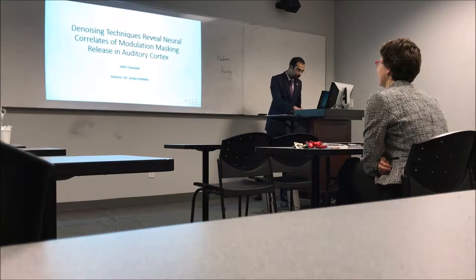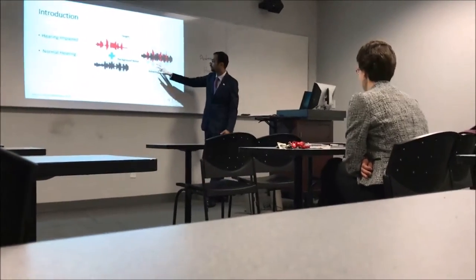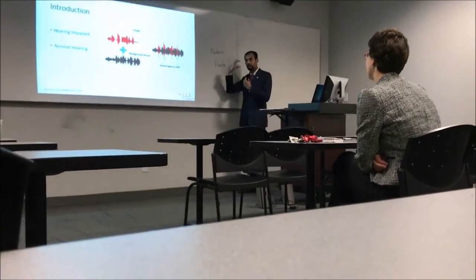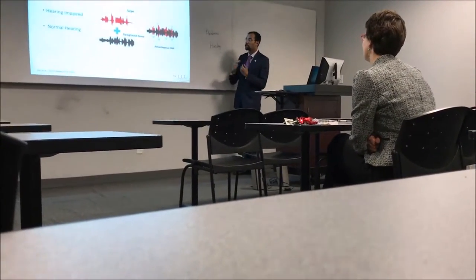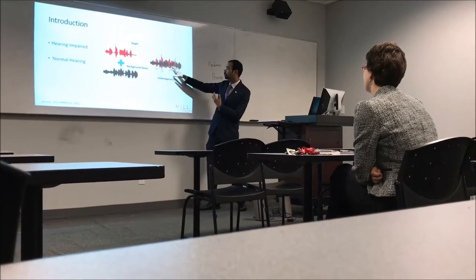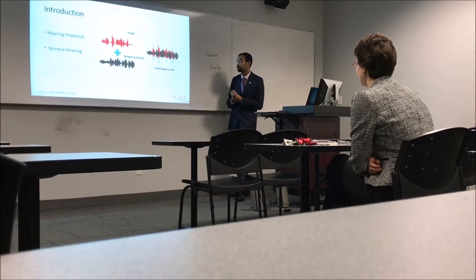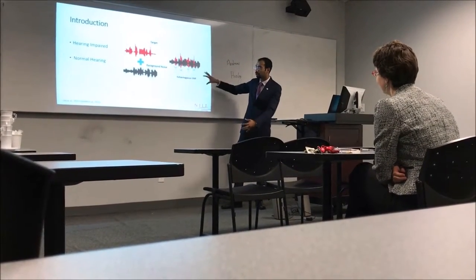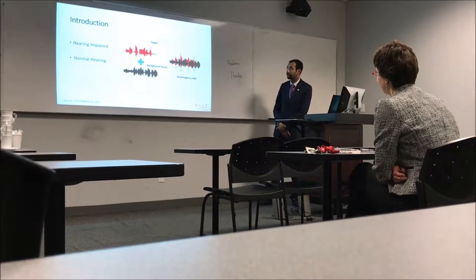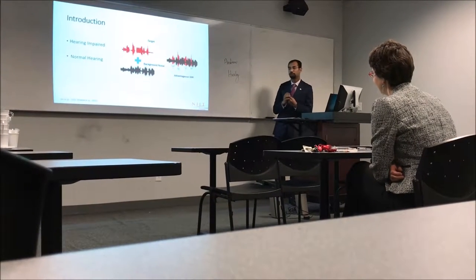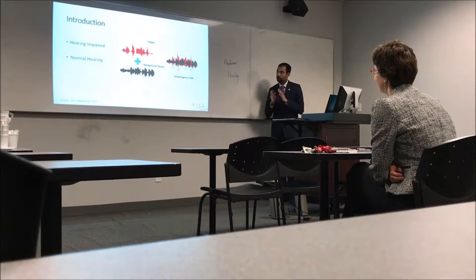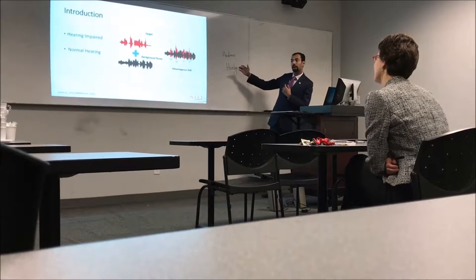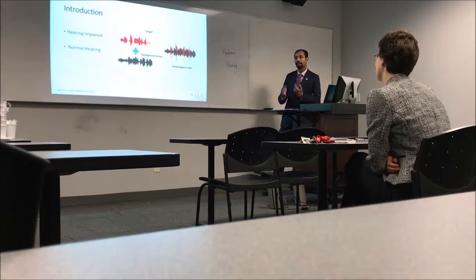I'll start with the phenomenon where background noise is heard together with a target. There are some points where the signal-to-noise ratio increases, and that is the point where the normal ear can listen. We call it deep listening. Since this is a fluctuating background noise, there are dips and the listener can easily listen. But when there is a non-fluctuating background noise, it is like a common noise across spectrally, so it is difficult for any listener to hear the target sound. The improved performance in tone detection during fluctuating background noise compared to non-fluctuating is called modulation masking release.